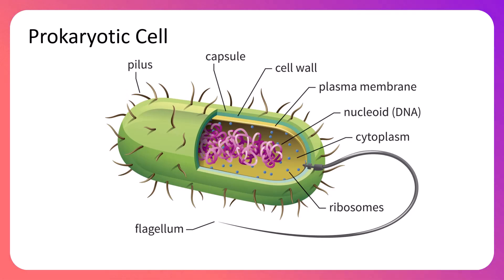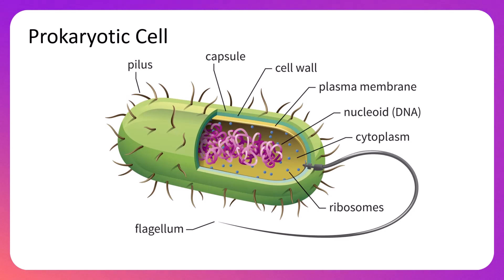Moving out from the cell membrane, in a prokaryotic cell you have a cell wall, which is always composed of peptidoglycan. In some cases there is a thick capsule on the outside, which provides protection from harsh environmental conditions. Outside of that you may see a pilus or pili, which the cell uses to attach itself to its environment.